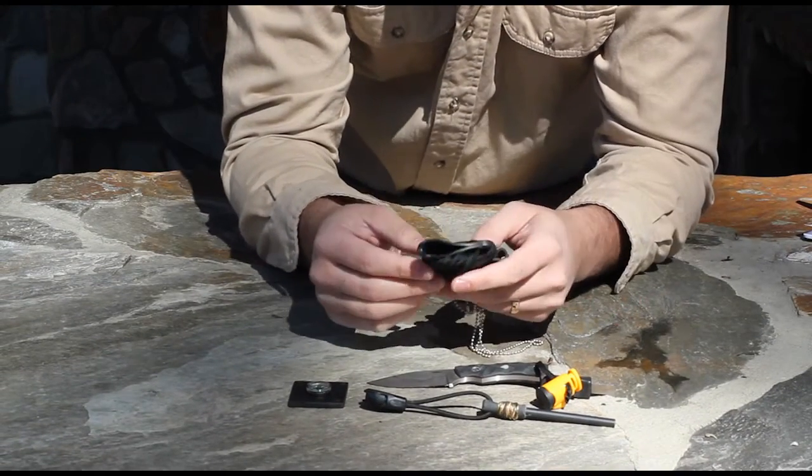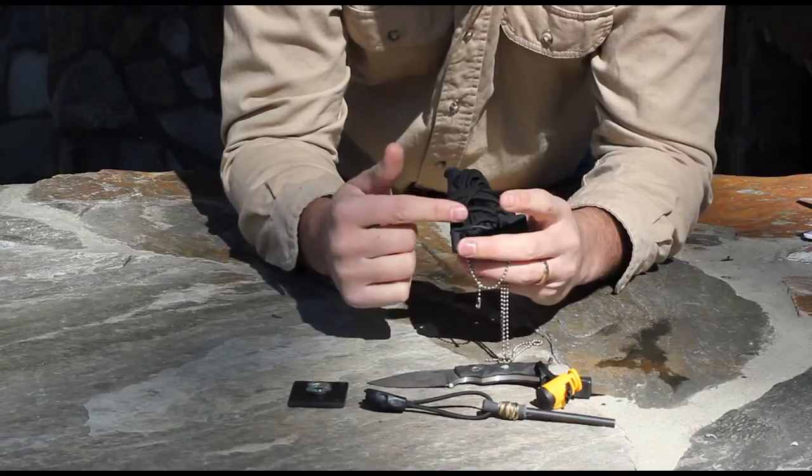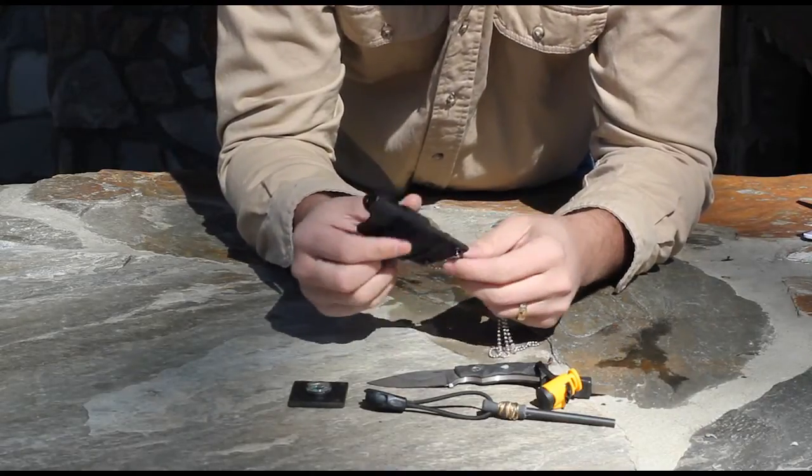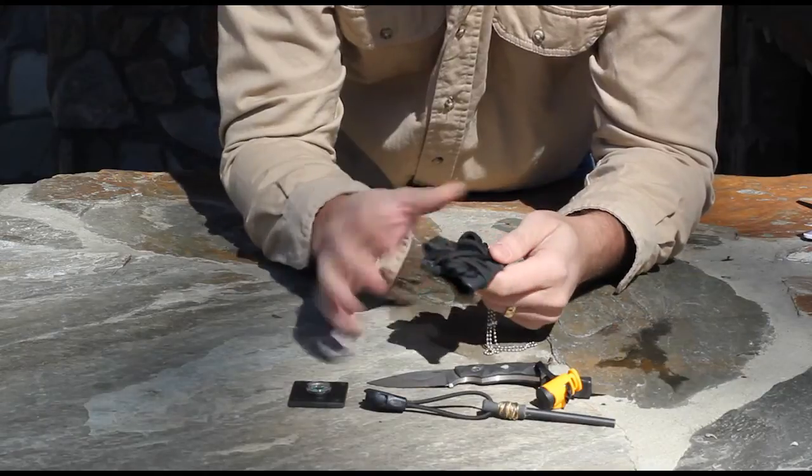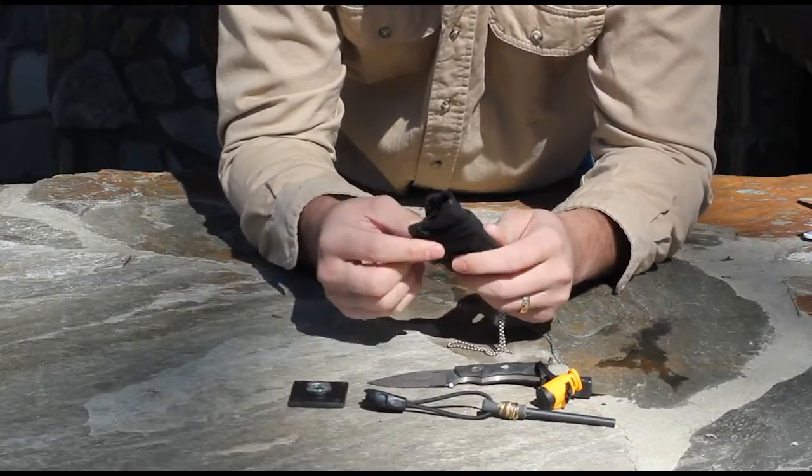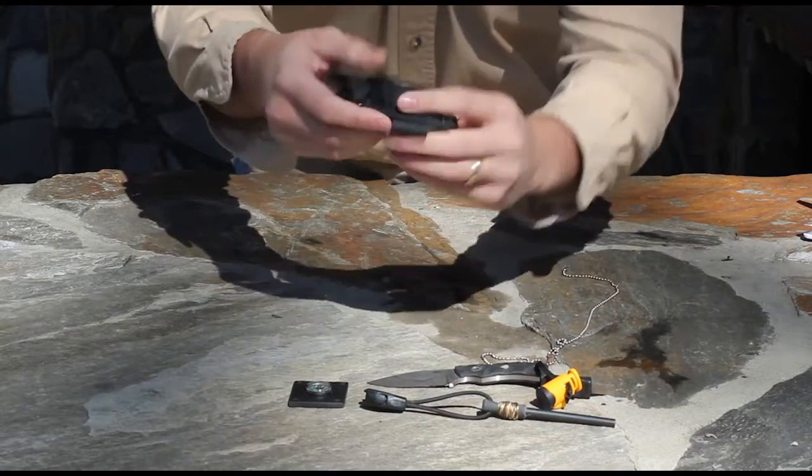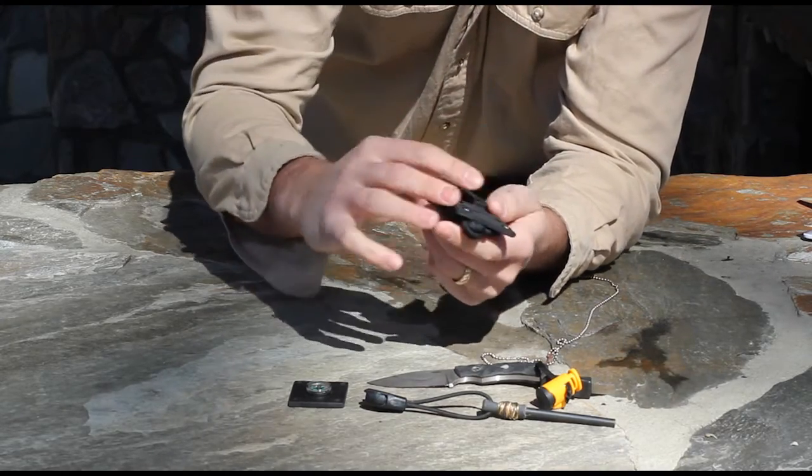The sheath is kydex and there's seven feet of paracord wrapped around here and pretty compact. It's out of the way as well. You don't even really notice it's on there. But you can remove that and place the whole thing in your pocket.